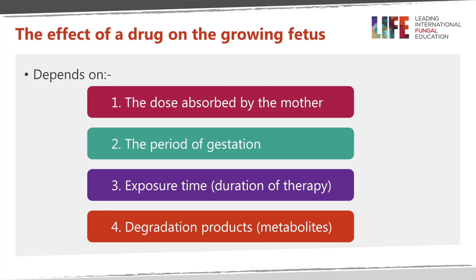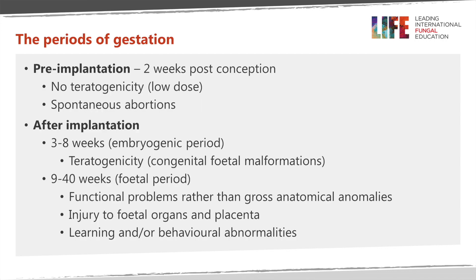The effect of a drug on the growing fetus depends on four parameters: the dose the mother absorbs; the period of gestation — whether it is in the first, second, or third trimester; the exposure time or duration of therapy — for example, two weeks of treatment may have a different effect from months of antifungal therapy; and whether the drug itself is active or whether its metabolites or degradation products are the ones demonstrating embryo toxic or teratogenic effects.